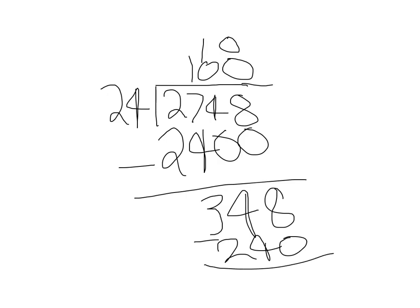8 minus 0 is 8. And 4 minus 4 is 0. 3 minus 2 is 1. So now we have 108.